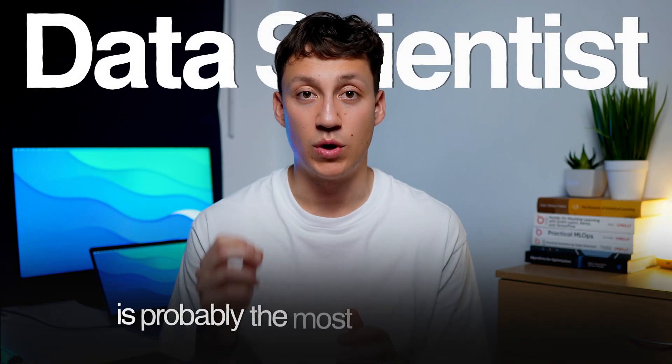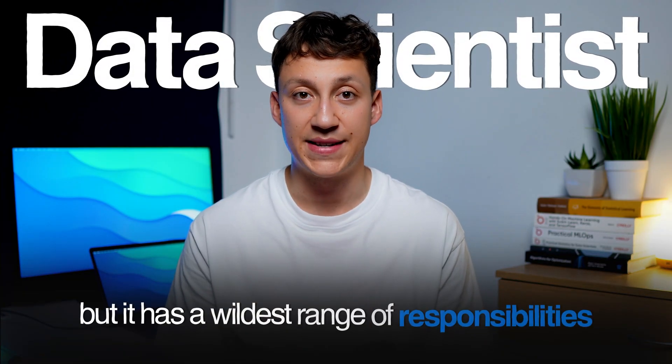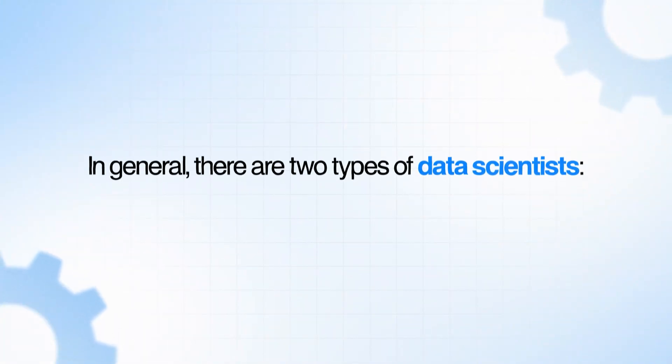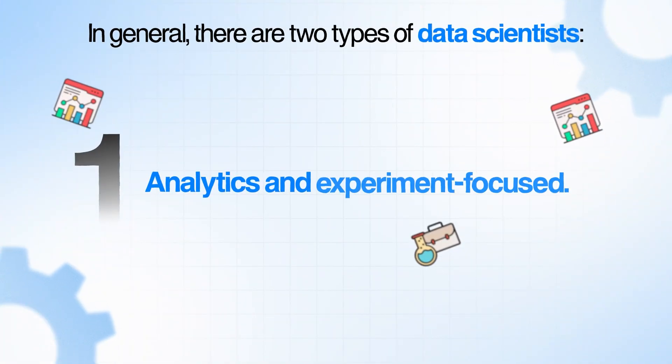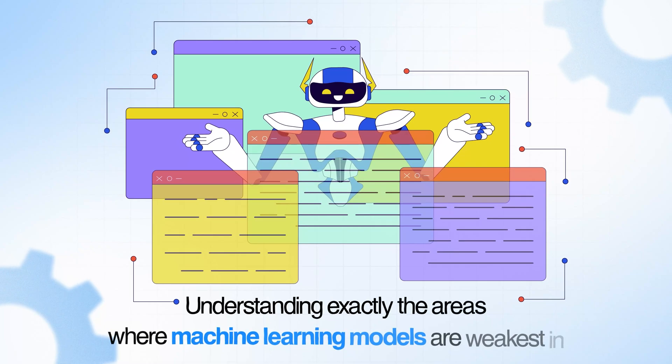A data scientist is probably the most well-known role but it has the widest range of responsibilities. In general there are two types of data scientist: the first one does analytics and experiments, and the second is focused on machine learning and modeling. The former includes things like running A/B tests, doing deep dives to understand where the business is struggling or could improve, or understanding exactly where machine learning models are weakest. A lot of this work is called exploratory data analysis, or EDA for short. Data scientists focused on the analytics side basically look at data to find where the business could be lacking or improve upon, and bring that to key stakeholders or machine learning engineers.